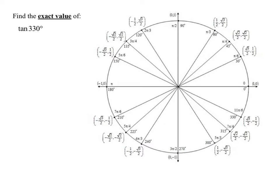But I need to find the tangent of 330 degrees so we have to write it in terms of sines and cosines. So remember the tangent of 330 degrees is the sine of 330 degrees divided by the cosine of 330 degrees.